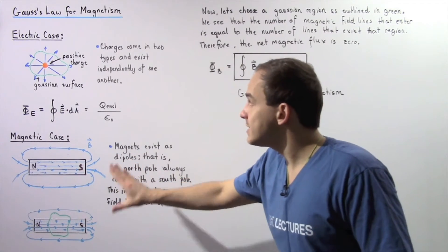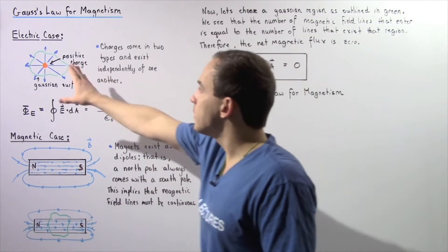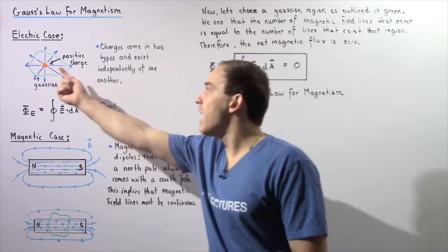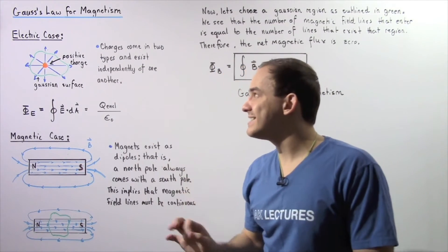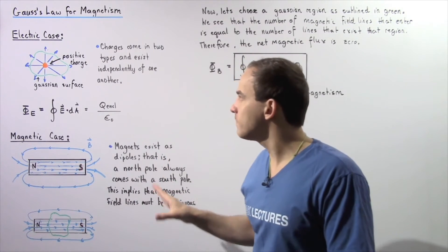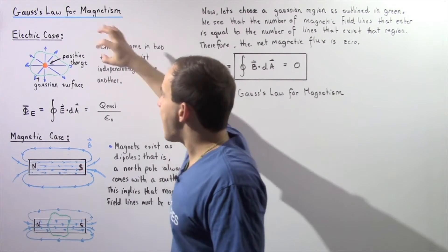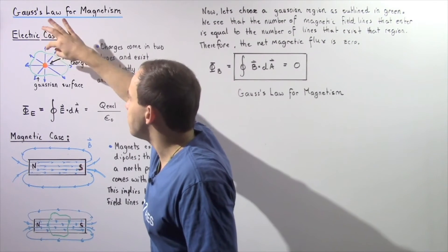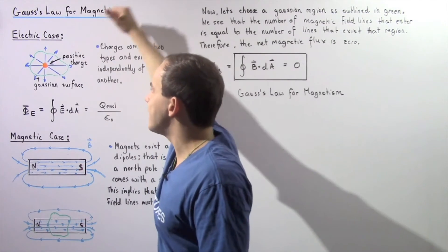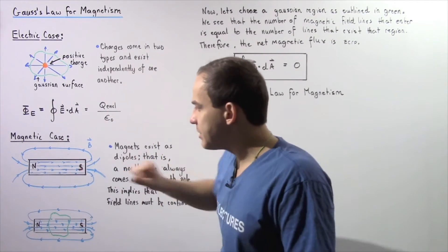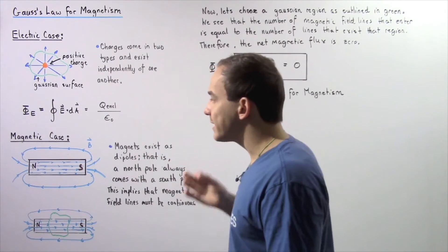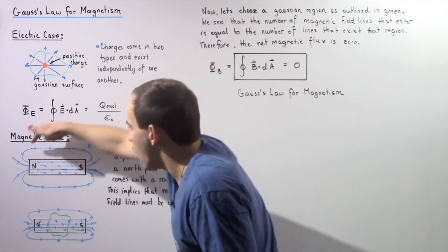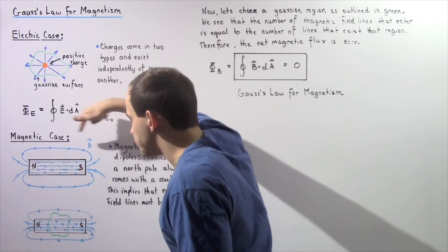This is a clear distinction from the electric case. Because our positive charge can exist in an isolated form, we see that our electric field lines begin on the positive charge and extend outward, versus in the magnetic case where our magnetic field lines essentially form continuous loops.